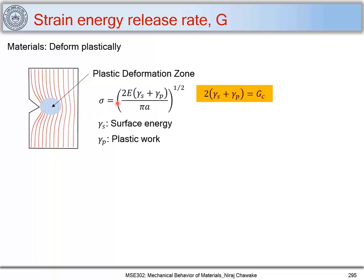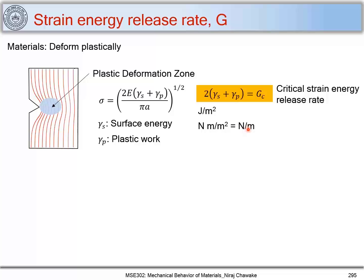Let me introduce another term. The term 2·gamma_S + gamma_P equals G_C. This is called the critical strain energy release rate, which is nothing but 2·gamma_S + gamma_P. Its unit is joules per meter square. When we write joules as Newton·meter per meter square, we get the unit as Newton per meter — that is the force required to extend this crack. Thus, G_C is also called the crack extension force.